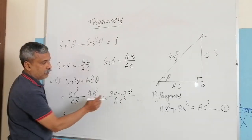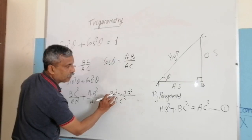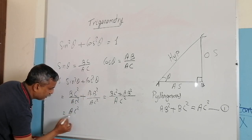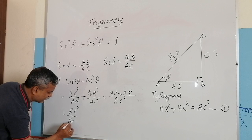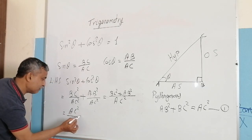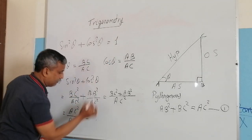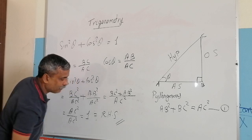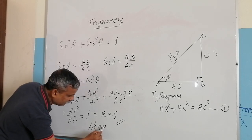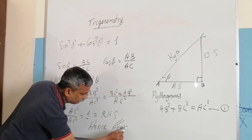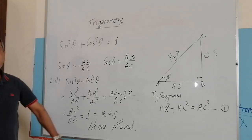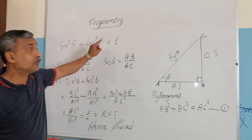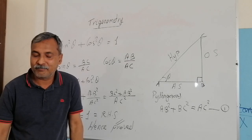Substituting from equation one, AB squared plus BC squared equals AC squared. So the numerator becomes AC squared and the denominator is AC squared, and AC squared divided by AC squared equals 1, which is our right-hand side. Hence proved. This is the proof of the first identity: sine squared theta plus cosine squared theta equals 1.